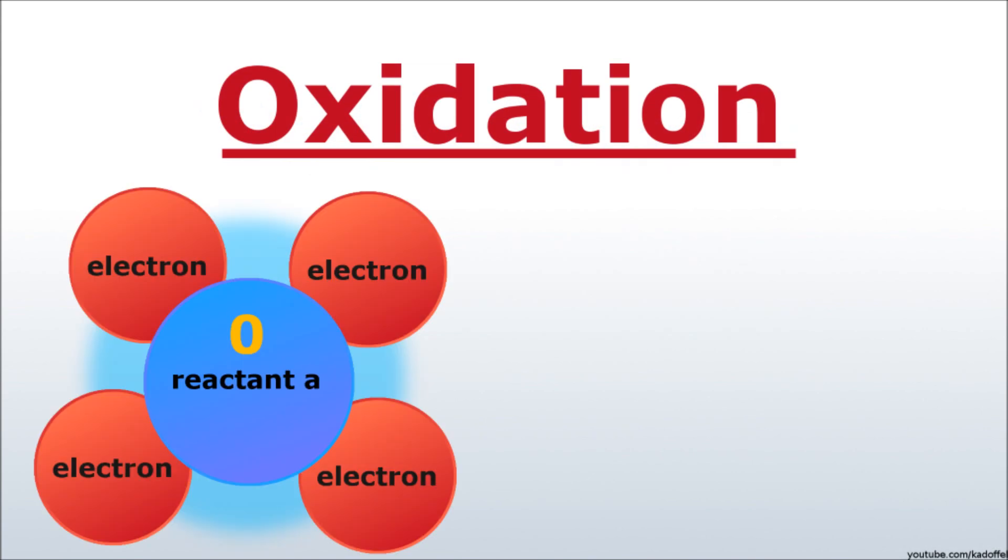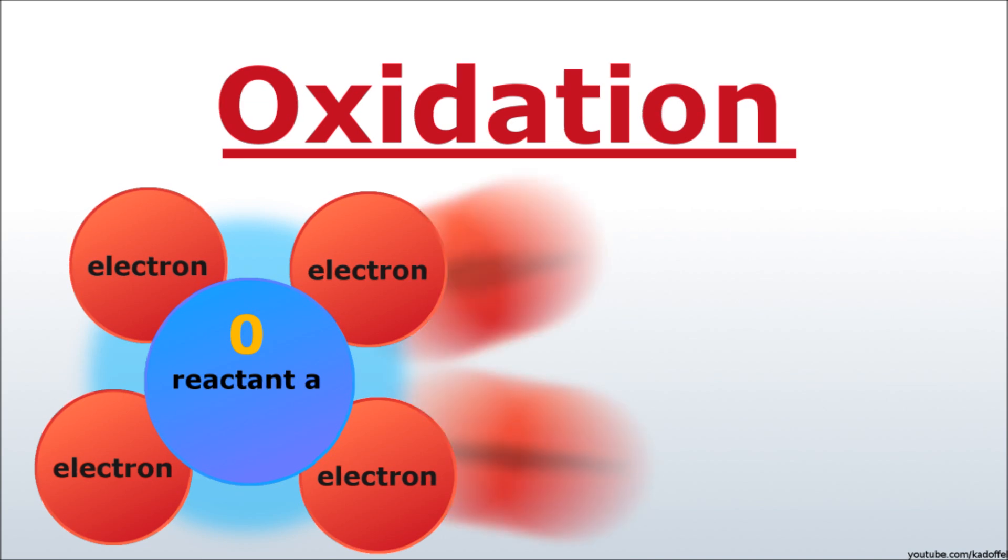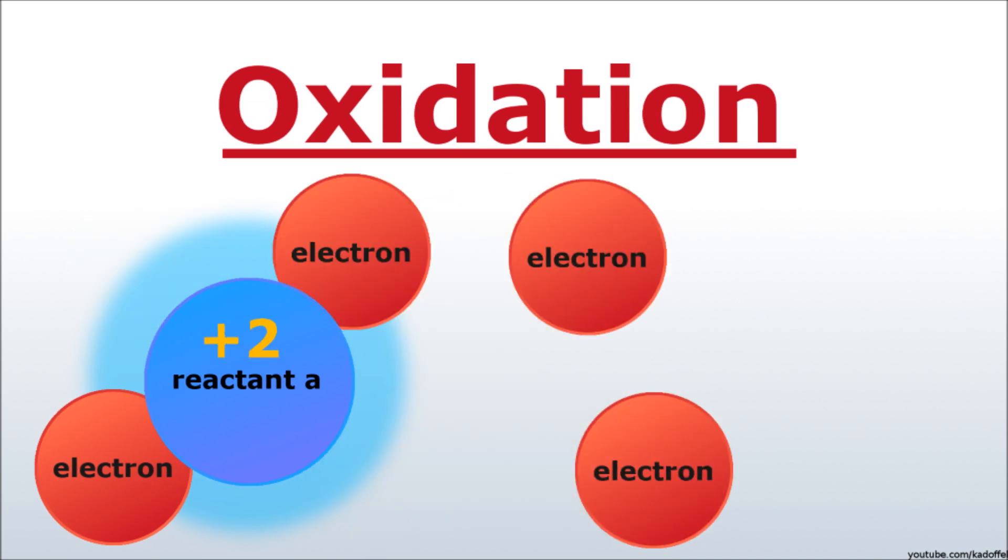This is reactant A. It has four electrons and an oxidation state of zero. By oxidation, reactant A loses two electrons. Hence it has lost two negative charges. Its oxidation number is now plus two.